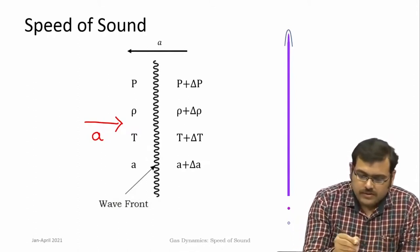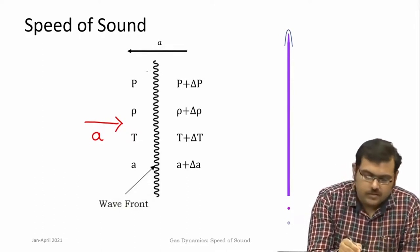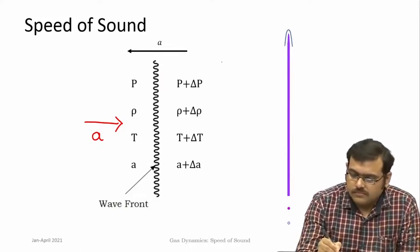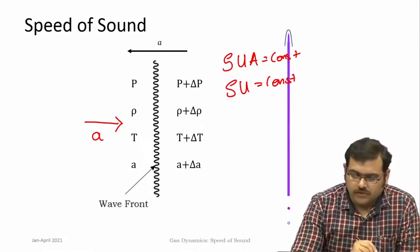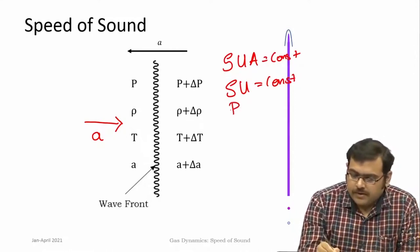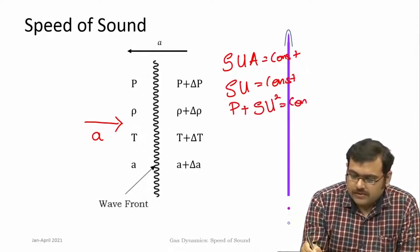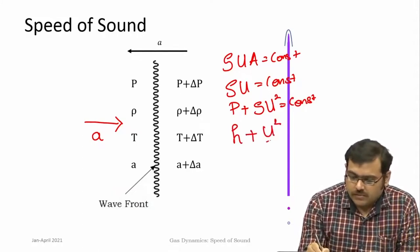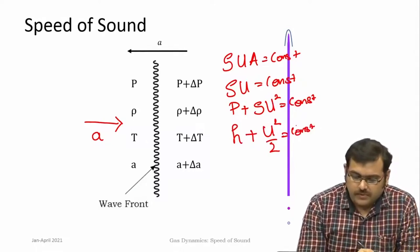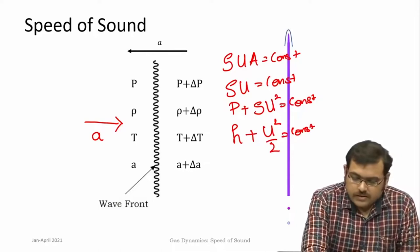This is a section in one dimension. You consider the one-dimensional flow where ρuA is constant. Since A is constant, you get ρu is constant. So u is the uniform velocity, and p + ρu² is constant — this is from momentum conservation. There is no heat addition or work done in these processes, so you get h + u²/2 is constant, that is conservation of energy. Using these three principles, let us look at how we can get to the speed of sound.